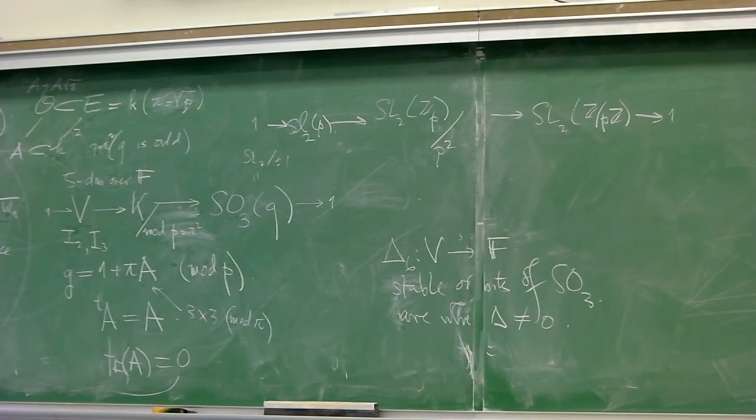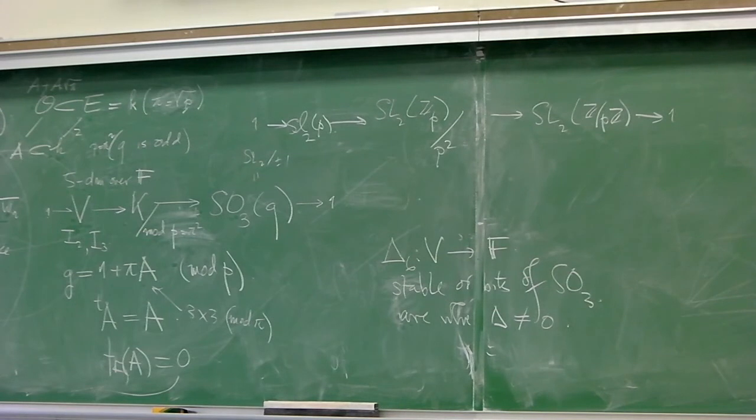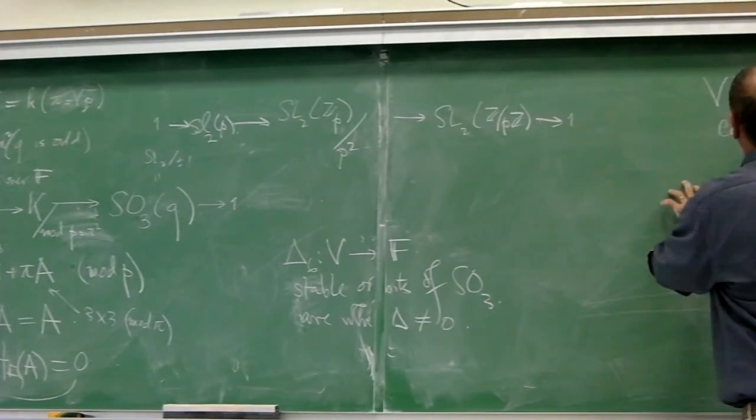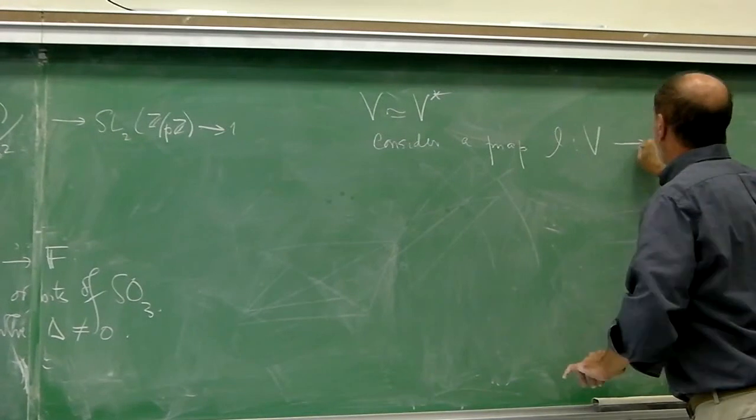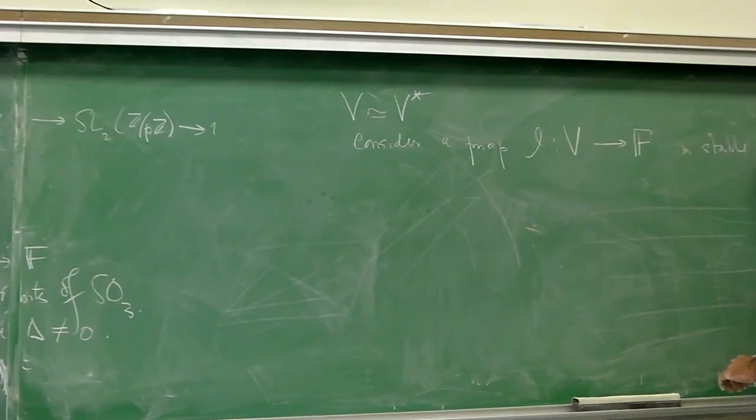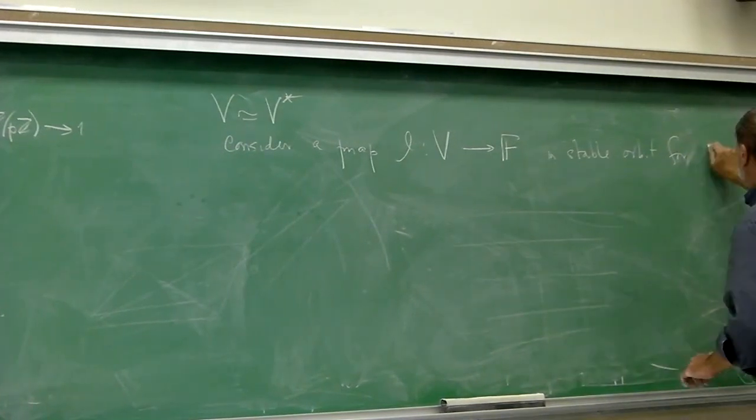And so, if you have an orbit in this, which is stable, this turns out to be a self-dual representation. So consider a linear form on V in a stable orbit.